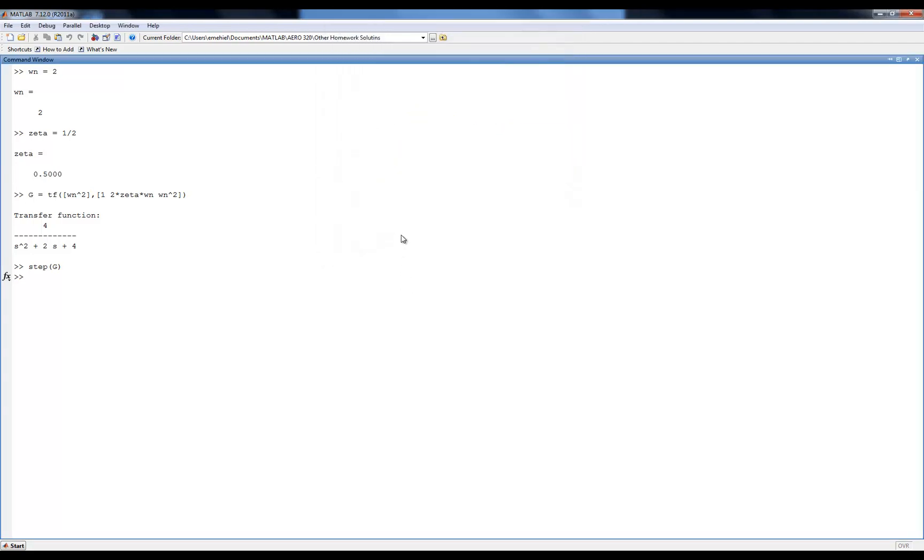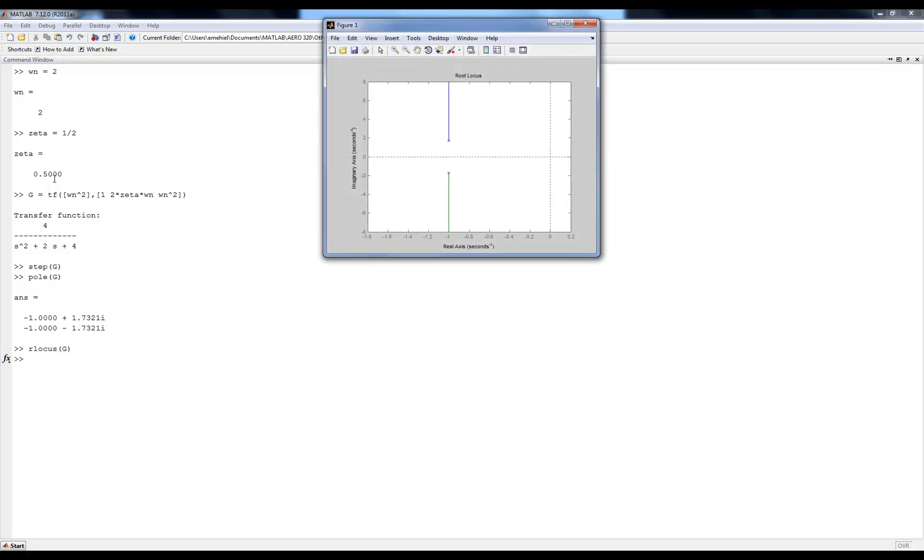And another interesting thing to look at is the poles of the open loop transfer function are at minus 1 plus or minus 1.73 j or i. And then we can go ahead and use the rlocus command, pass in the open loop transfer function, and we get this plot.